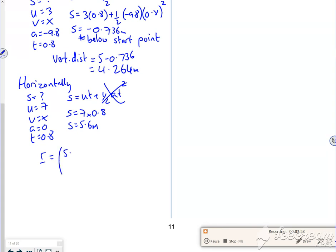so what is it? So it's 5.6 across and it's 4.264 up from the origin.